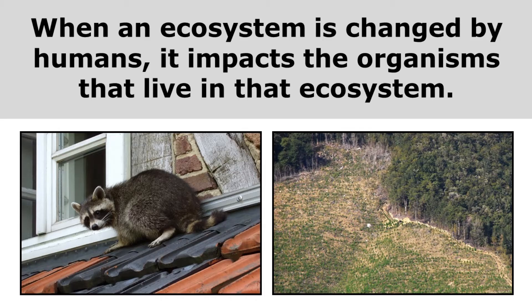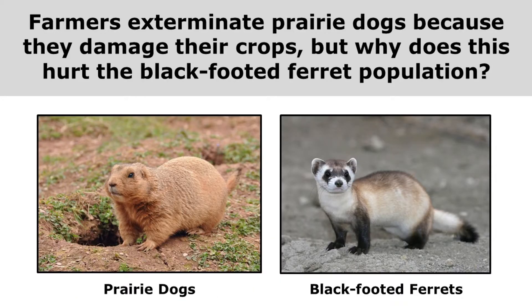When an ecosystem is changed by humans, it impacts the organisms that live in that ecosystem. When we build a town or cut down a forest, that affects the organisms that live in that area. It's also important to understand that the organisms in an ecosystem are connected. When you decrease one population, that can negatively affect other populations.